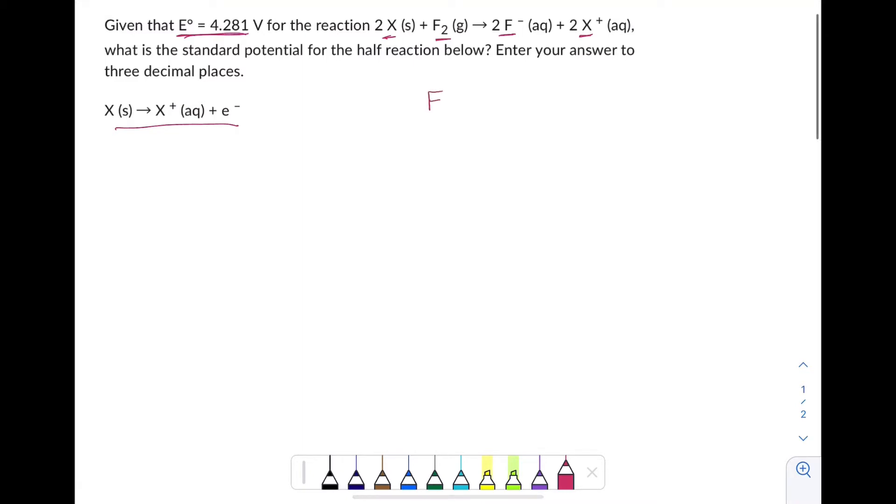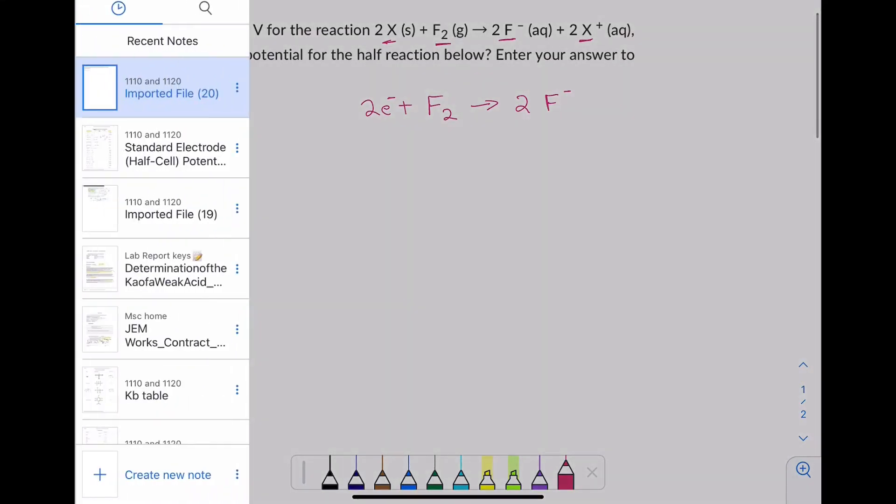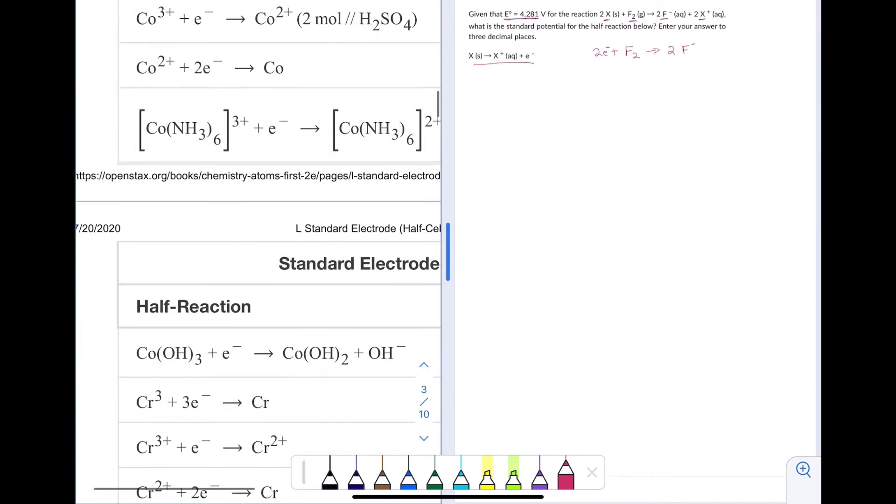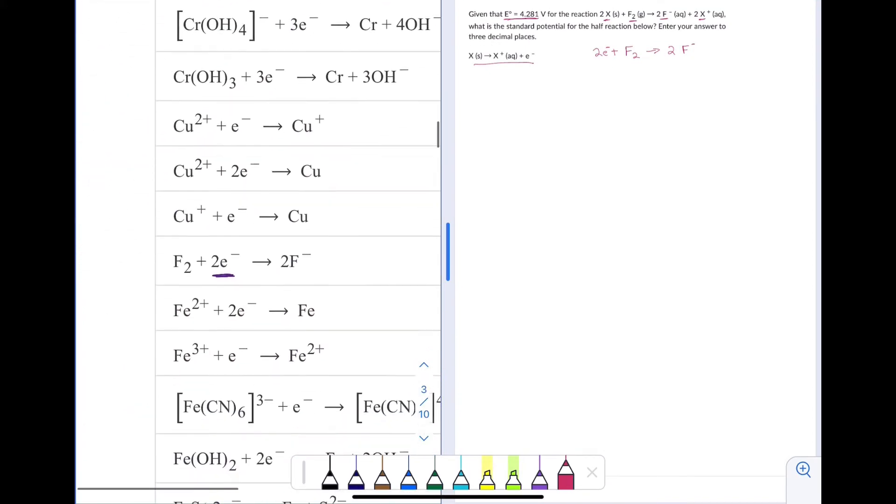I'm going to pull out the fluorine half reaction. So I've got F2 goes to 2F minus. That needs a couple of electrons and I can figure out where the electrons go by balancing the charges. I can also figure it out by looking at the actual half reaction.